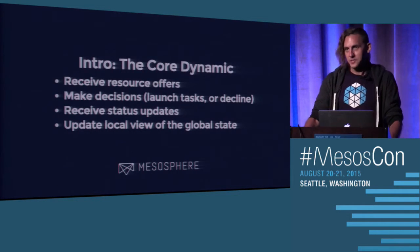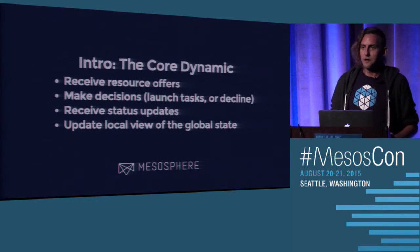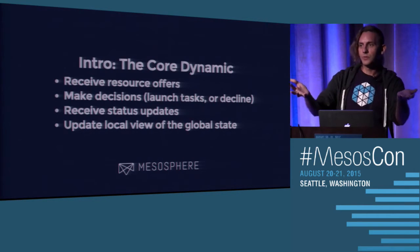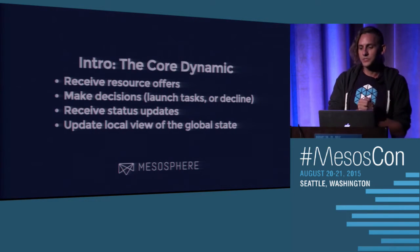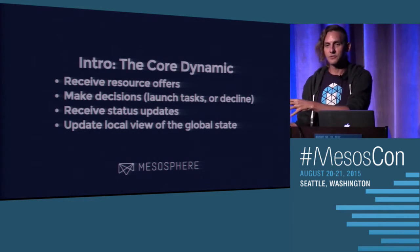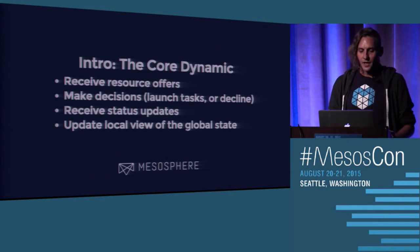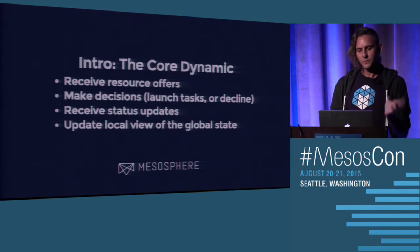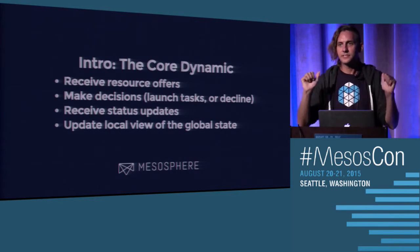The core dynamic is that Mesos will make resource offers to your framework scheduler, saying there's an agent here that has this set of resources available — would you like to do something with them? It's up to your scheduler to make decisions to launch tasks on those resources or decline the offer so those resources can be offered to another framework. It's very important that you decline and don't hoard offers unless you know what you're doing.